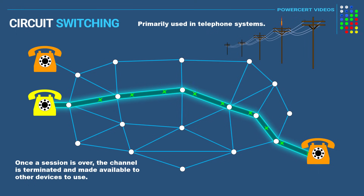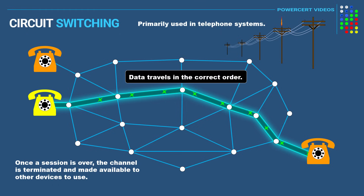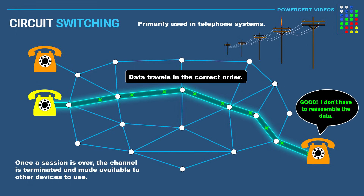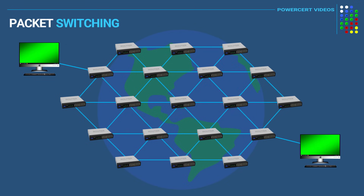And as the data travels, it travels in the correct order. And because they travel in the correct order, there is no need for the receiver to do any kind of reassembly to make the data readable.